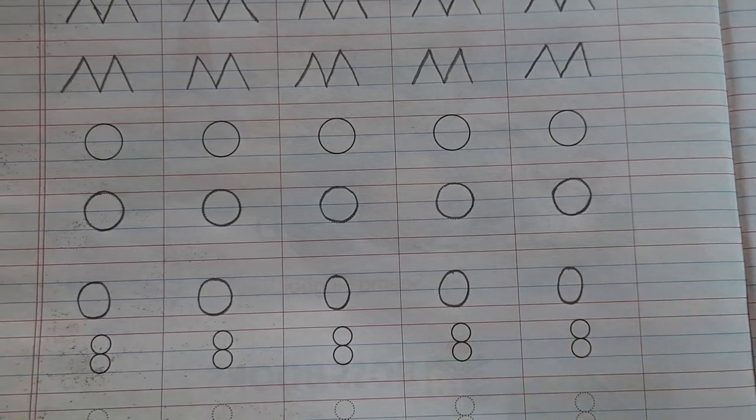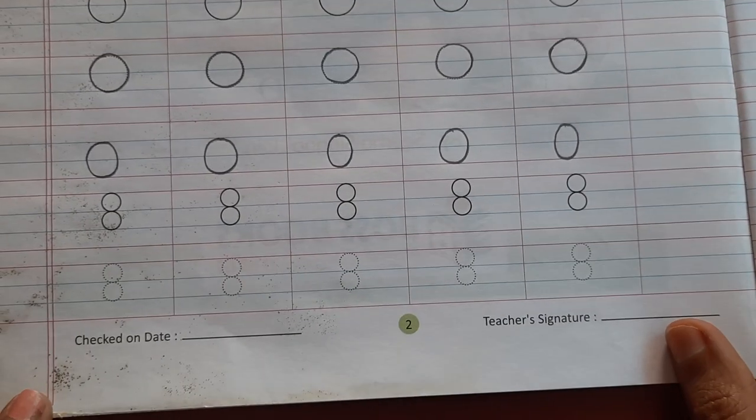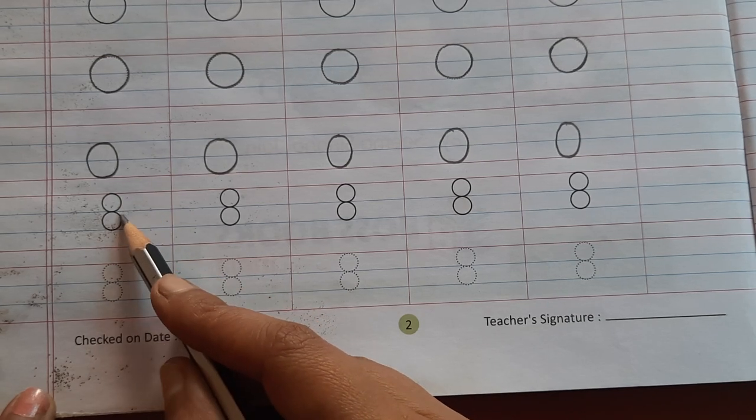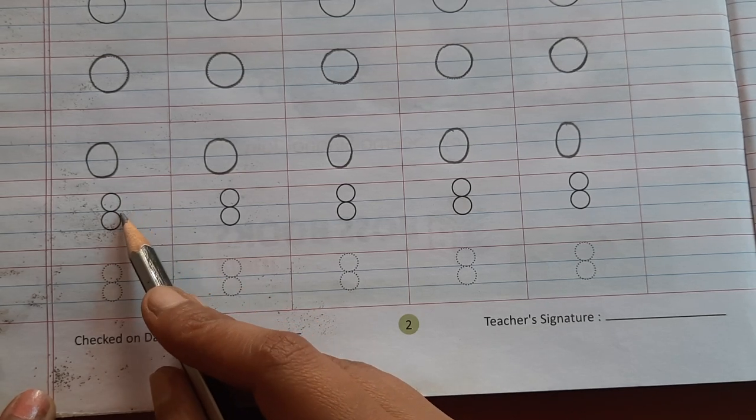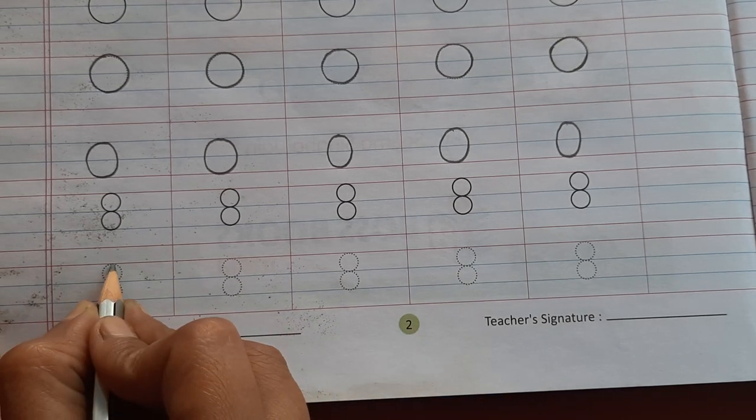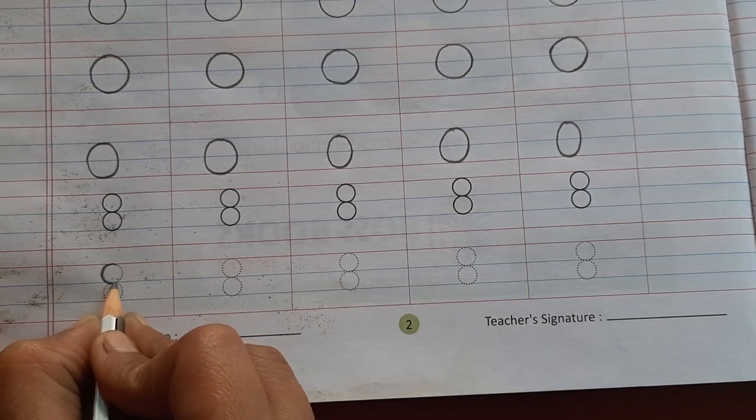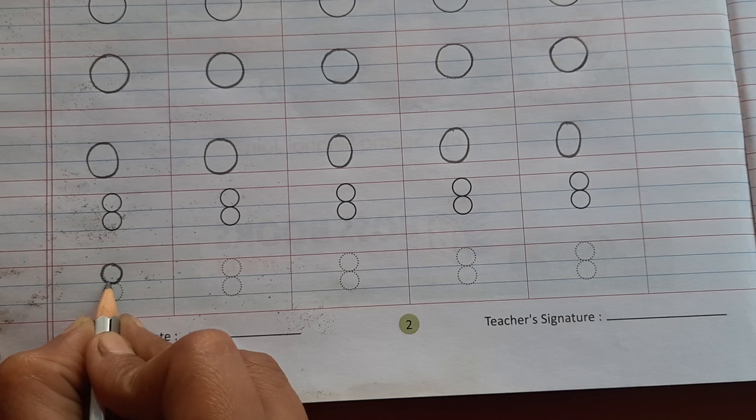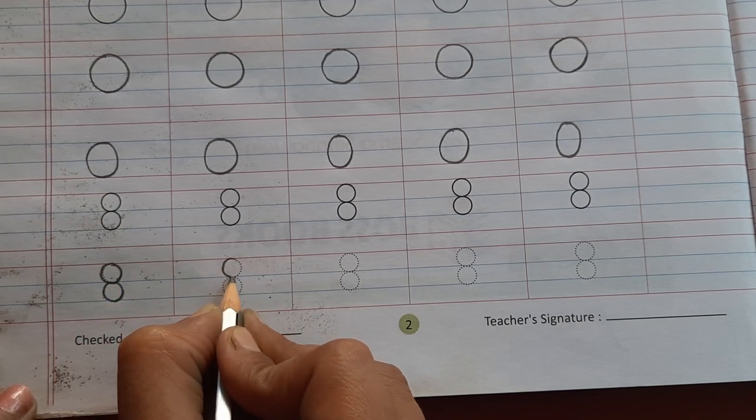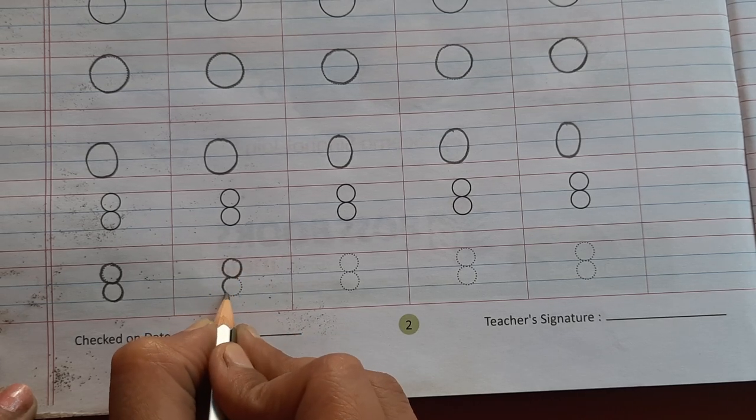This circle is on the four lines, and last circle is on two lines. First two lines, small circle, next two lines, small circle. Starting with this, using this circle you can make a number eight.